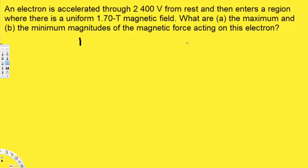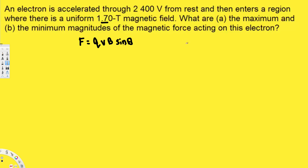To find this, we have to use the equation F = qvB sinθ, where F is the force, q is charge, v is velocity, B is the magnetic field, and sinθ is the angle between the velocity and the magnetic field. Let's check whether we have all the information. q for the electron we know, velocity we don't have, B is provided, and theta is just the angle. So we need the velocity first.